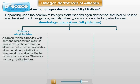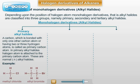1. Primary Alkyl Halides: A carbon which is bonded only to one other carbon atom is called a primary carbon atom. In primary alkyl halides, the halogen atom is attached to the primary carbon atom. These are normal alkyl halides. For example: Methyl Chloride CH3Cl, Ethyl Bromide CH3CH2Br.